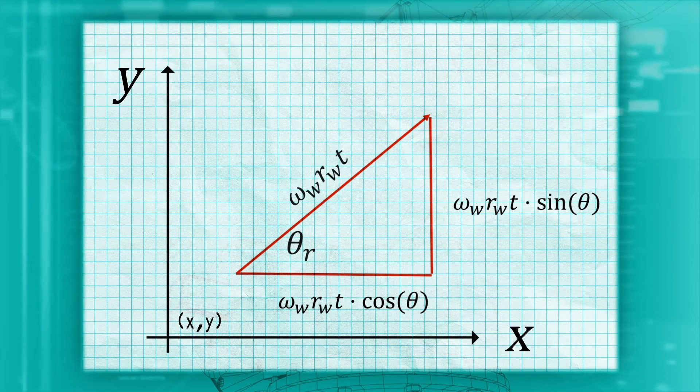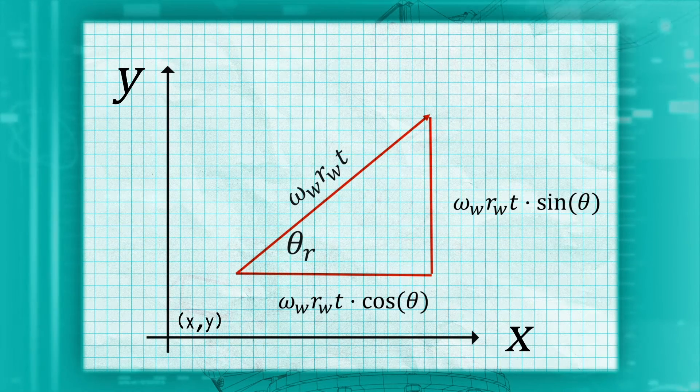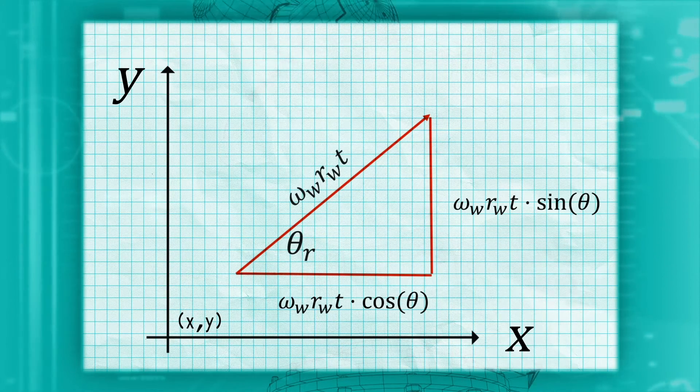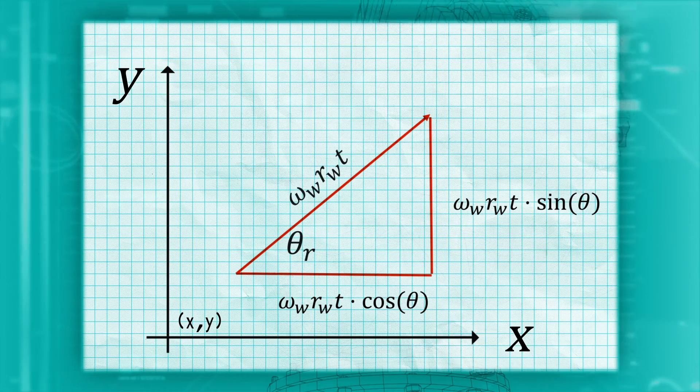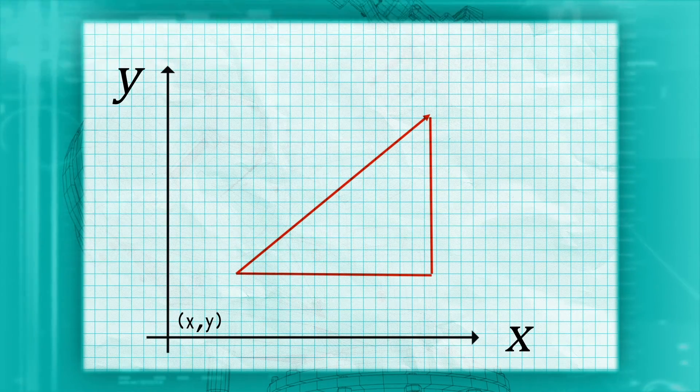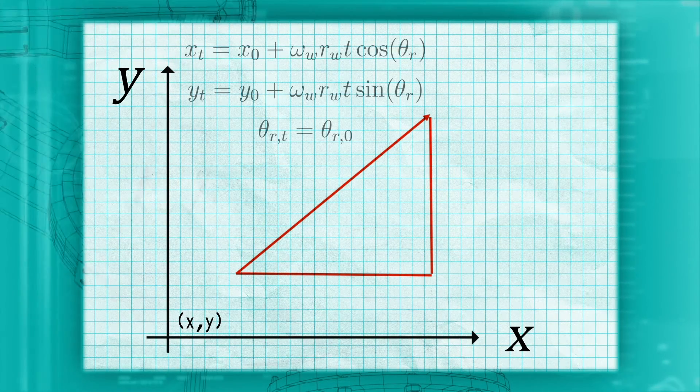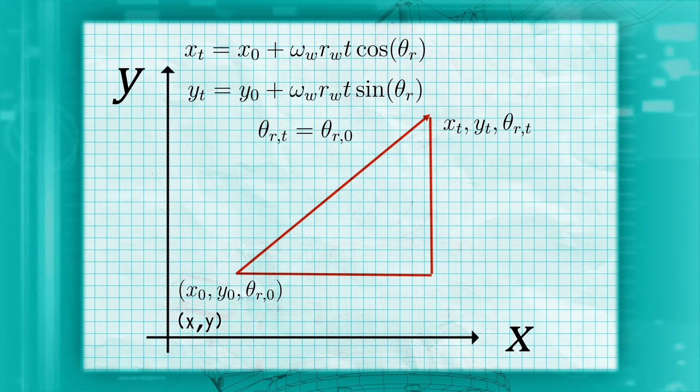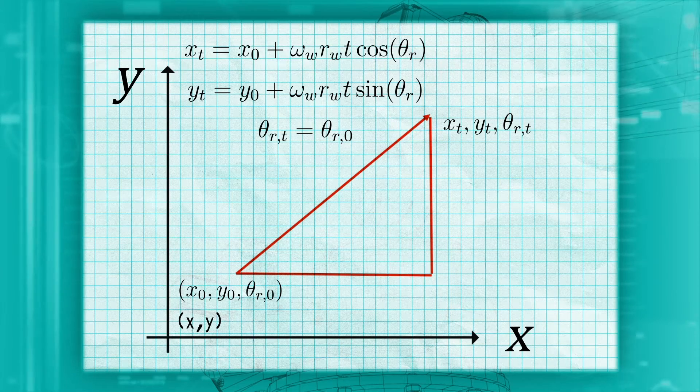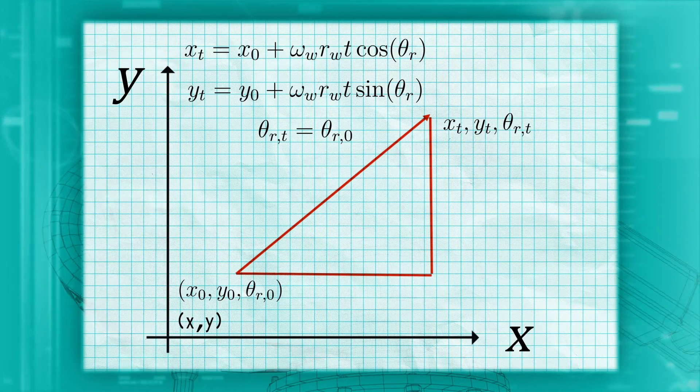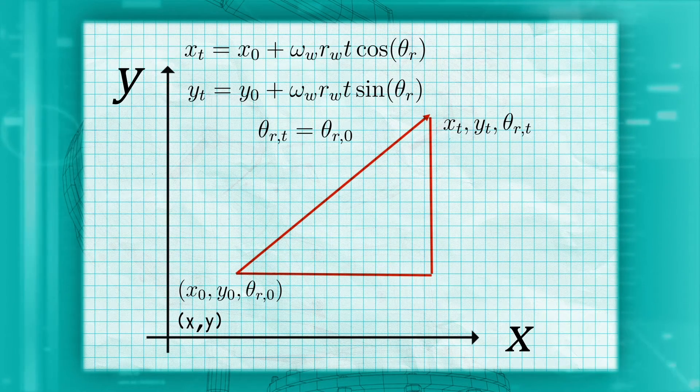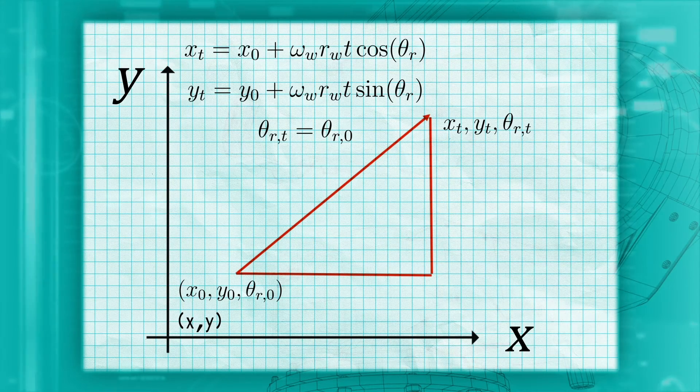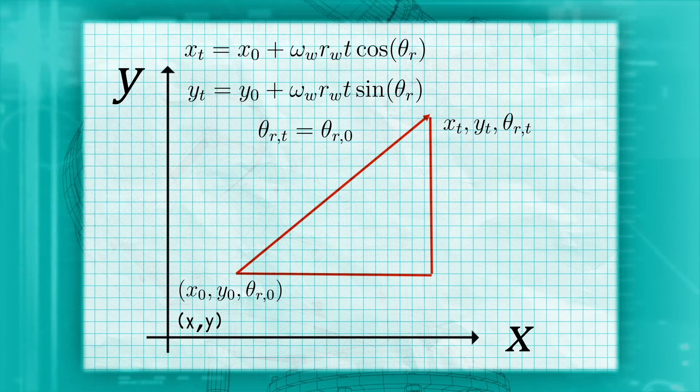Therefore, if we start at (x, y) with orientation θ, and the total displacement we calculated earlier was ωrt, we will end up at time t at x-coordinate of x + ωrt cos(θ), and the y-coordinate of y + ωrt sin(θ), in the same robot orientation we started with, θ.